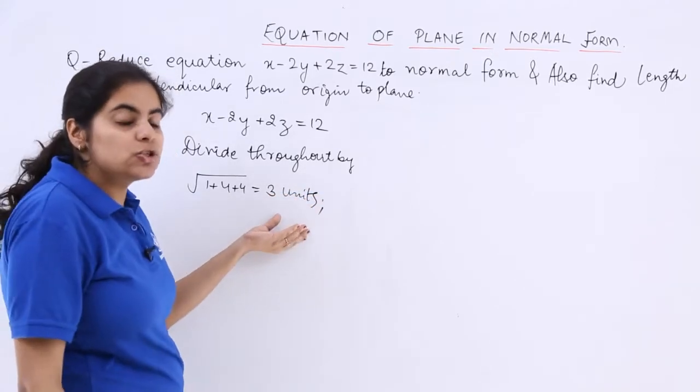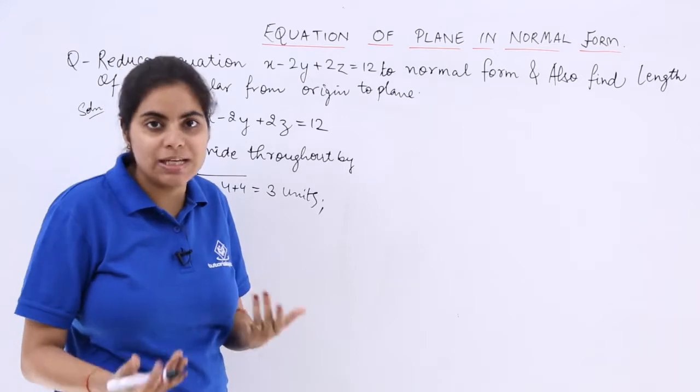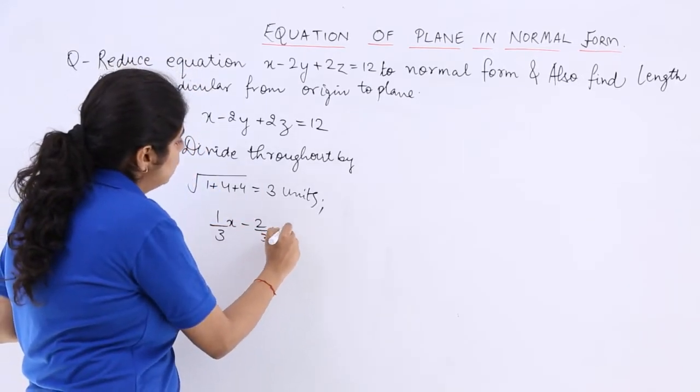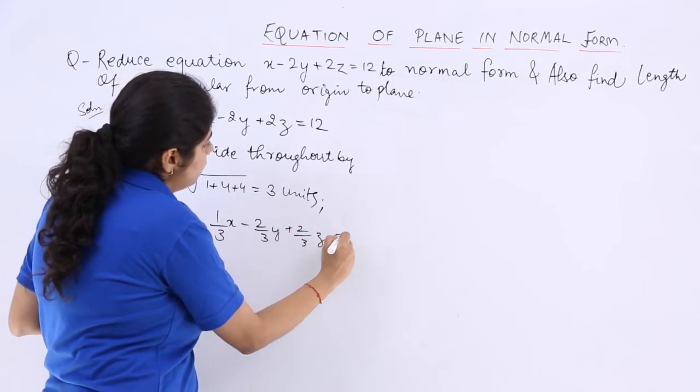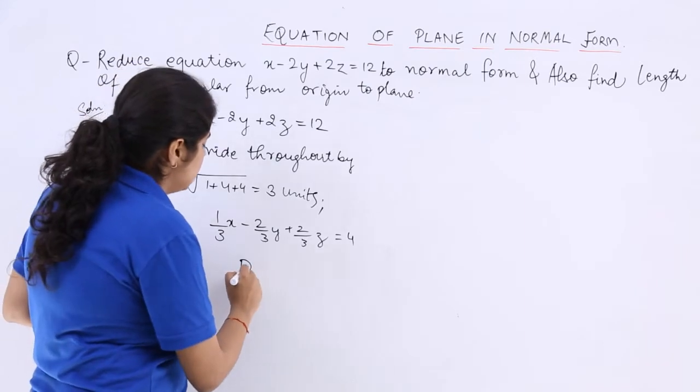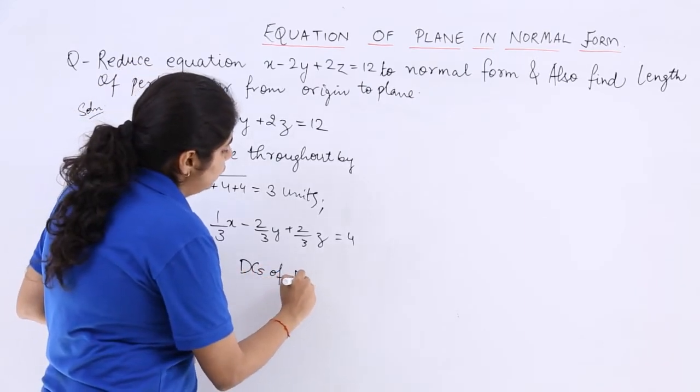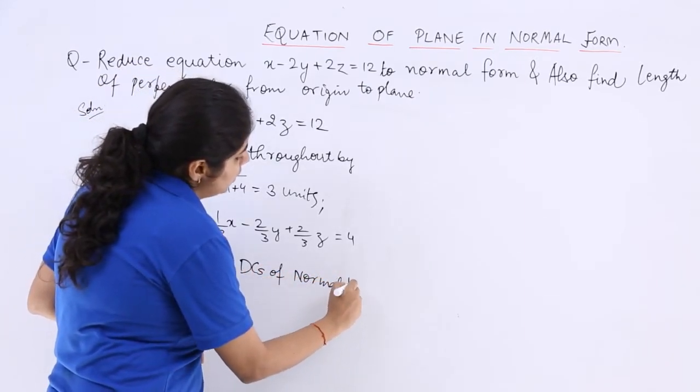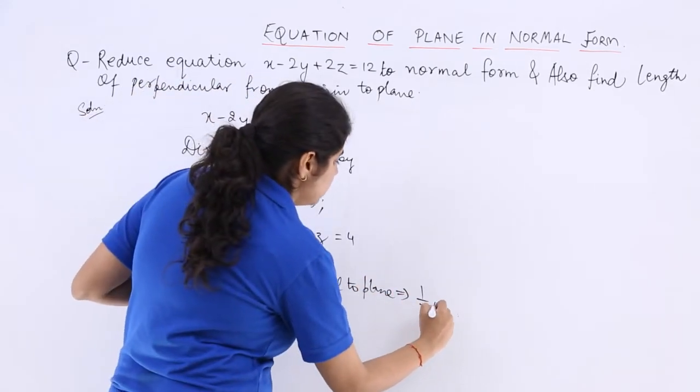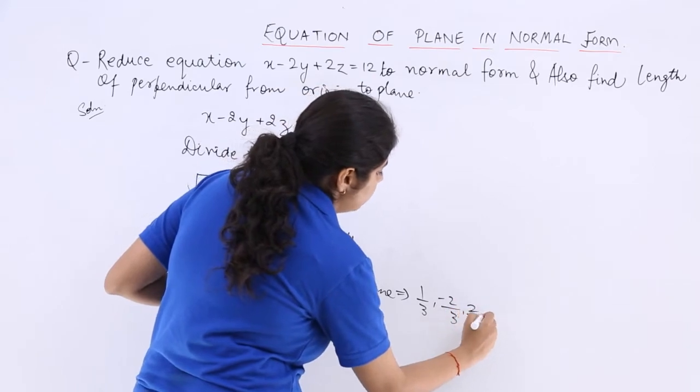Now why are we doing so? Just to obtain the direction cosines of the normal to the plane. So our equation becomes a bit different and this equation has direction cosines of normal to plane specifically mentioned as 1 by 3, minus 2 by 3, and 2 by 3.